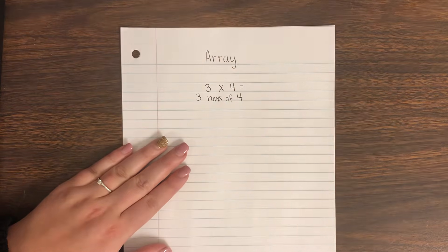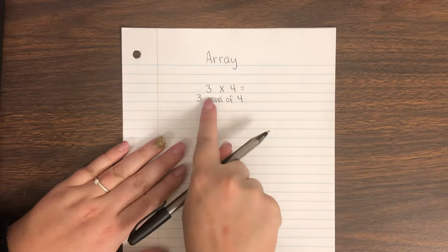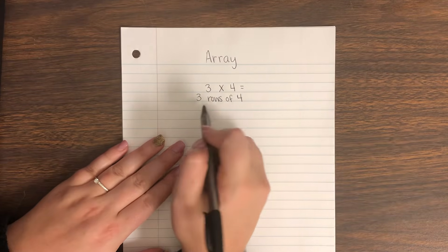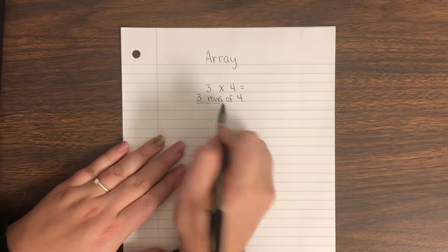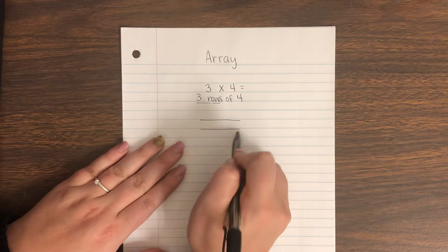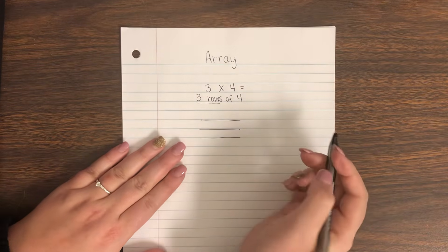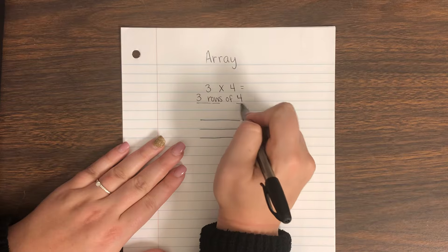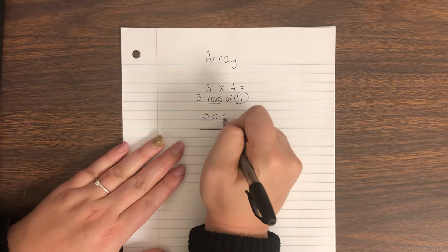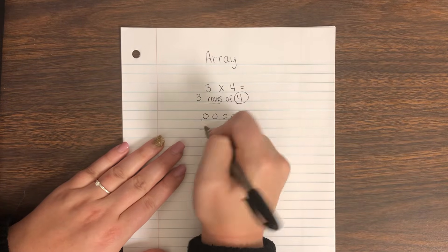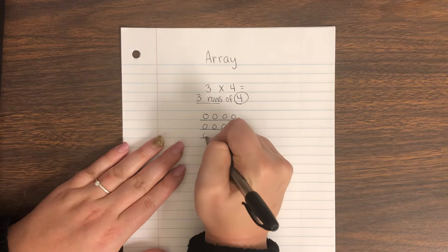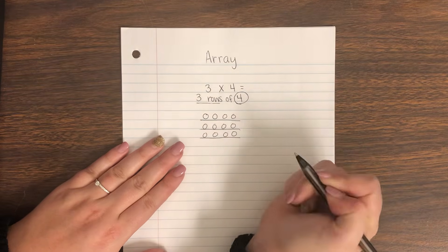This is how we're going to solve our multiplication problem using an array. First we're going to draw three rows — one, two, three — and on each row we're going to put four: one, two, three, four. We do that for each of the three rows.